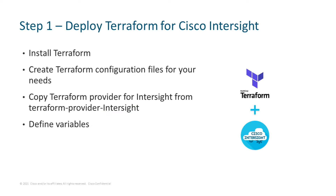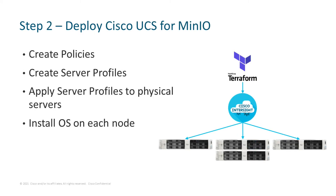The deployment of the whole project is a three-step process. In step one, we deployed Terraform for Cisco InterSight: we install Terraform, create Terraform configuration files, define variables, and add the Terraform provider for InterSight. Step two is to create policies and server profiles with Terraform and apply the server profiles to all four MinIO storage nodes. Finally, we do an install of the operating system on each node — all done with Terraform.